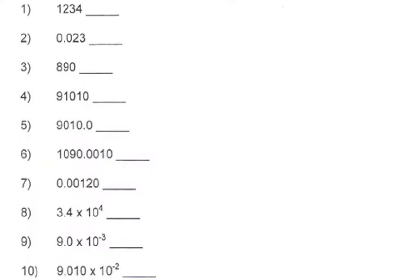So what we're going to do next — we'll pause the video, you'll do problems one through ten, and then we'll see how we do. Okay, for number one we have one, two, three, four — so we have four significant digits because they're only numbers greater than zero, they're non-zero digits, they're all significant.